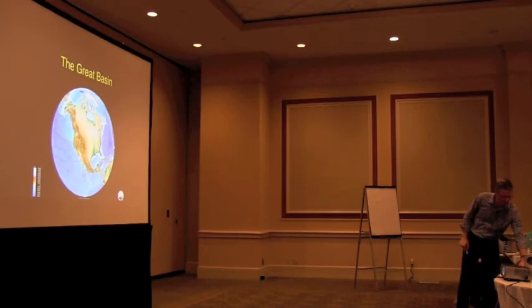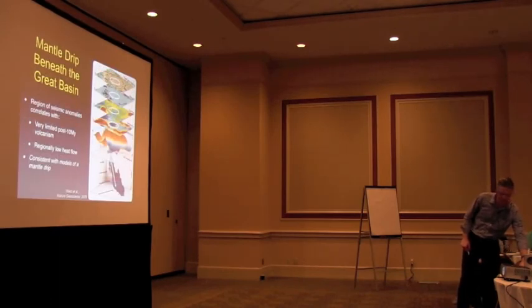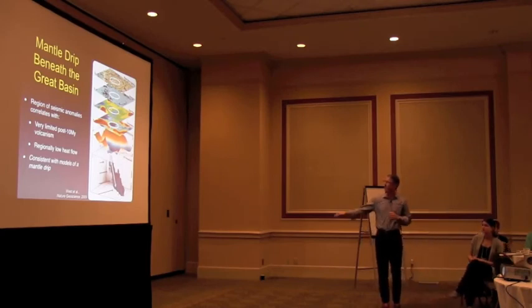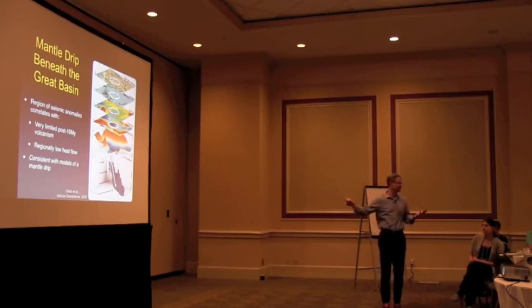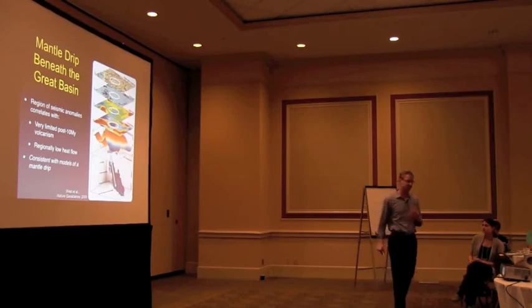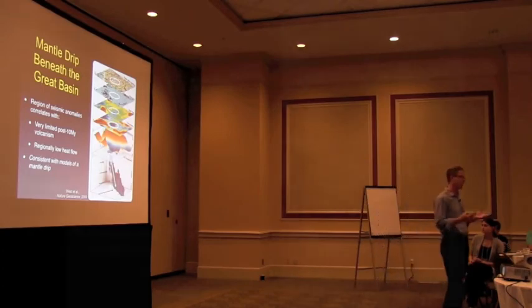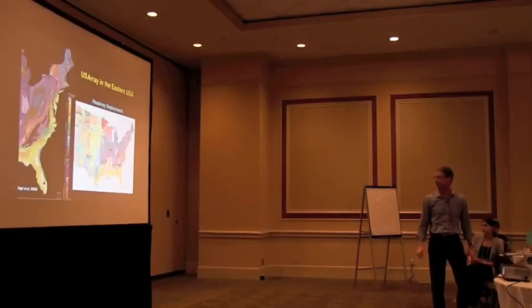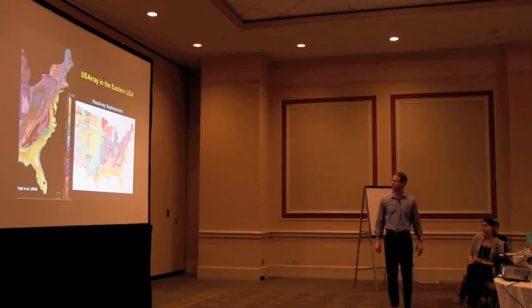I'm also going to jump into the Great Basin quickly. This is a compilation of a lot of measurements, but we looked at the volcanism of the area. Actually, there's very little in the last 10 million years. We looked at heat flow and the seismic structure. This is actually an image of a volume of seismic structure, and we think we found a place where the plate is actually dripping off the base of the plate. That's a bit controversial, but it actually explains a lot of related structures.